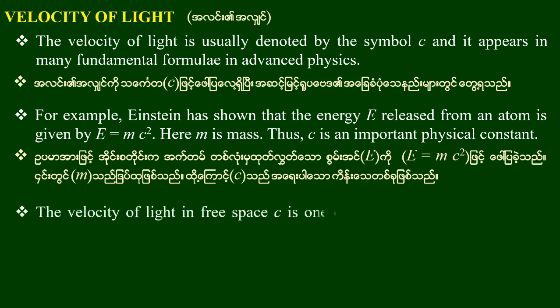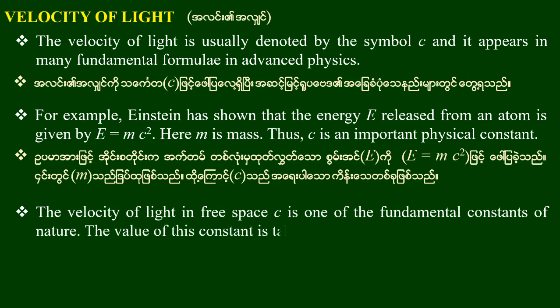The velocity of light is one of the fundamental constants of nature. The value of this constant is approximately 3 × 10⁸ meters per second.